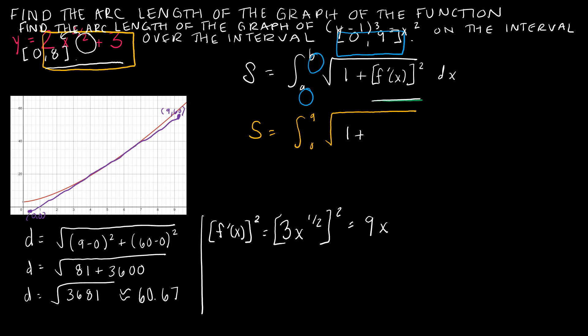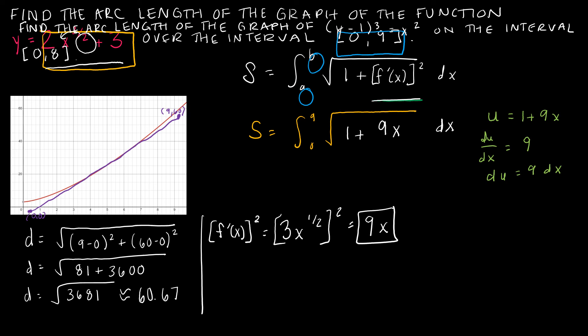I'm going to replace that with 9X DX. So now I have the integral from 0 to 9 of the square root of 1 plus 9X DX. From here I need to integrate, but it's hard to integrate with this square root function, so we need to do a flashback to calculus 1 — we're going to use U-substitution. Let U equal 1 plus 9X, which means du/dx is the derivative of 1 plus 9X, which is just 9, and we write that as du equals 9 DX.